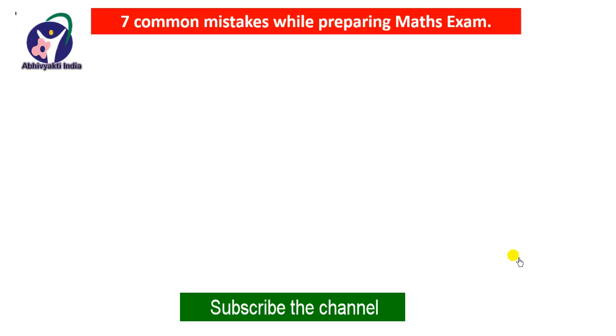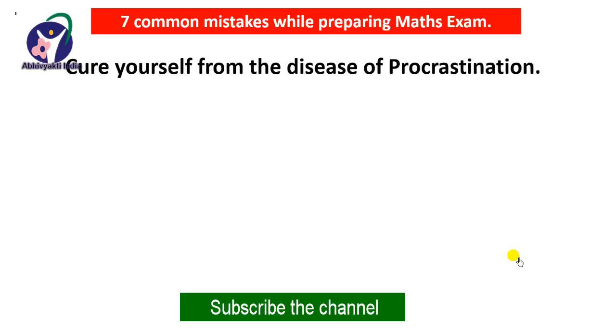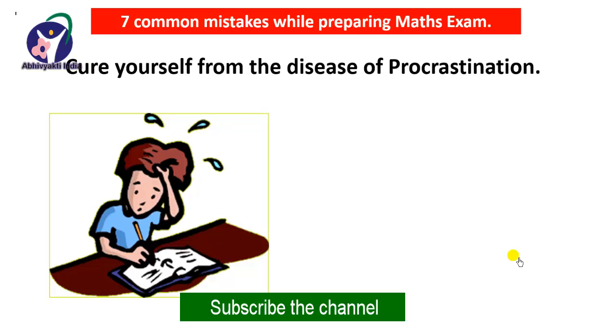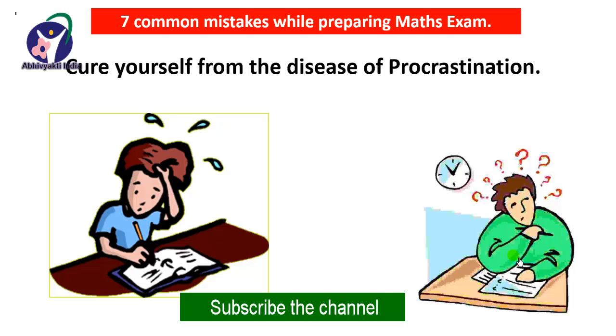The sixth tip is cure yourself from the disease of procrastination. Dear friends, remember if you have doubts about any question or topic, please do not wait. Try to clear your doubts at the earliest. Come out of the disease of procrastination. Do not prolong. Do that immediately. Kal kare so aaj kar so aaj kar so aap. Follow this method so that you will solve your doubts immediately.